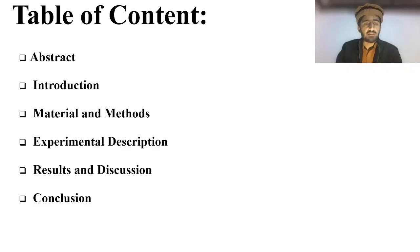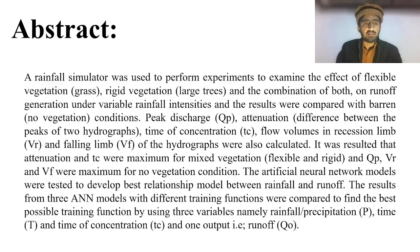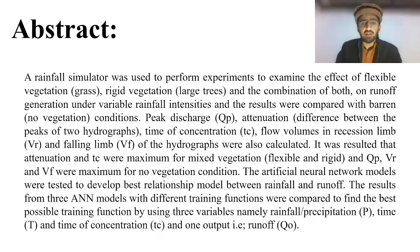Table of Contents: Abstract, Introduction, Material and Methods, Experimental Description, Results and Discussion, and Conclusion. Abstract: A rainfall simulator was used to perform experiments to examine the effects of flexible vegetation (grass), rigid vegetation (large trees), and the combination of both, on runoff generation under variable rainfall intensities. Results were compared with bare land (no vegetation), and peak discharge QP attenuation, time of concentration TEC, flow volumes in recession limb VR and falling limb VF of the hydrographs were calculated. It was found that attenuation and time of concentration TEC were maximum for mixed vegetation.